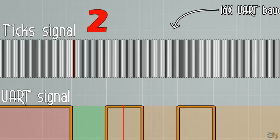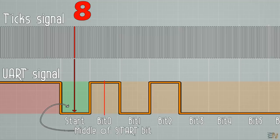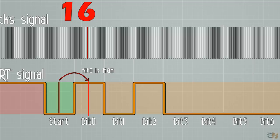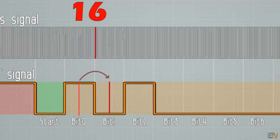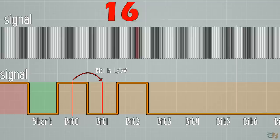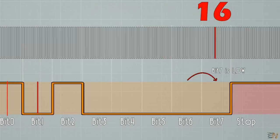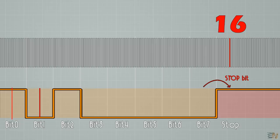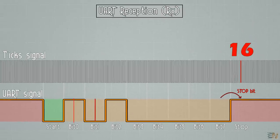So, we detect the start bit and we count 8 ticks. So now we should be in the middle of the start bit. Then we count 16 ticks more and now we save the data for the first bit. We count 16 more and now we are into the second bit and so on till we get the last bit. Finally, we count 16 ticks more and we read the stop bit, which should be high. Now we have the entire received byte.